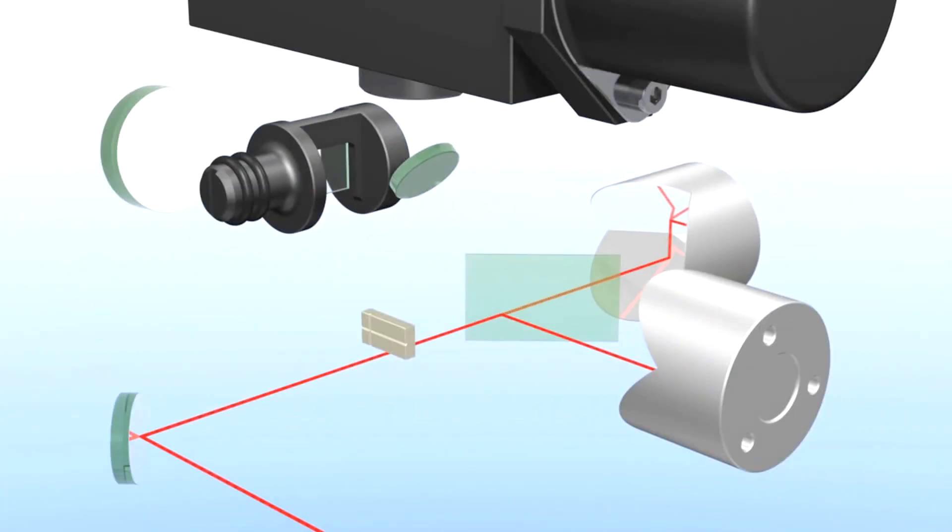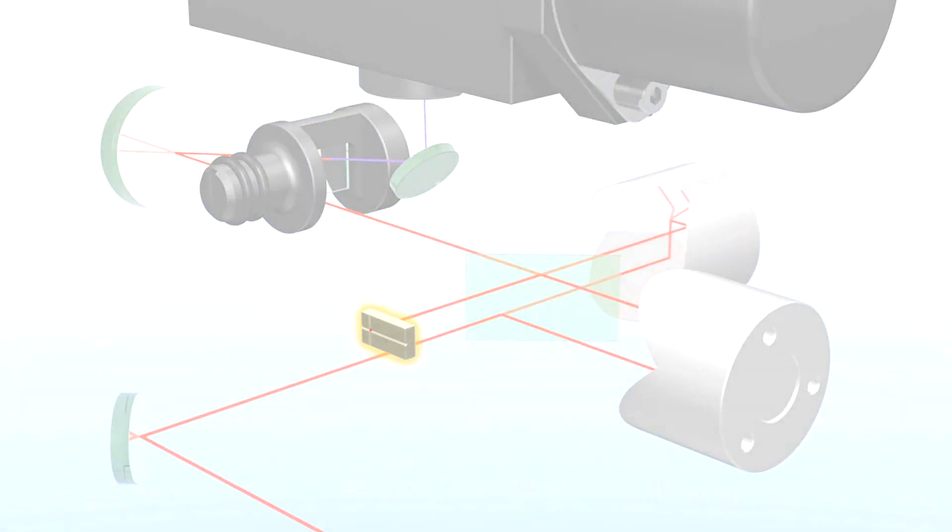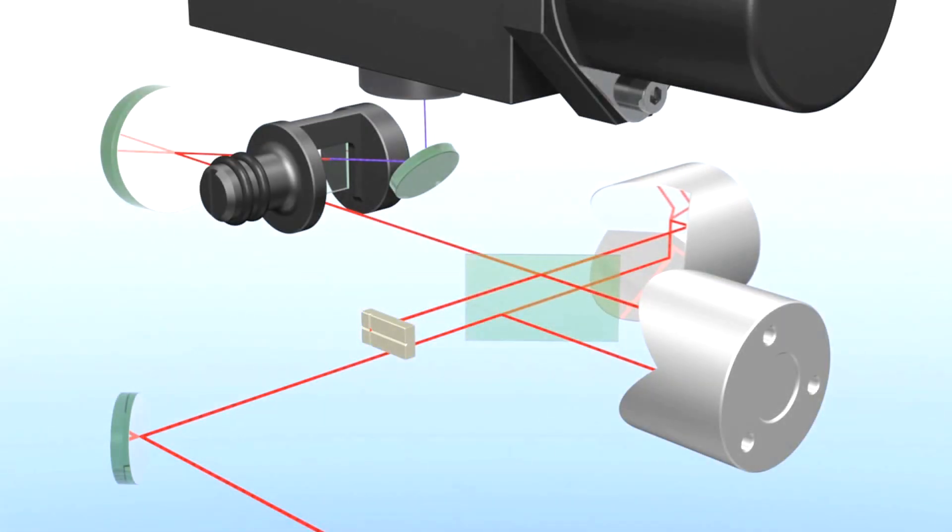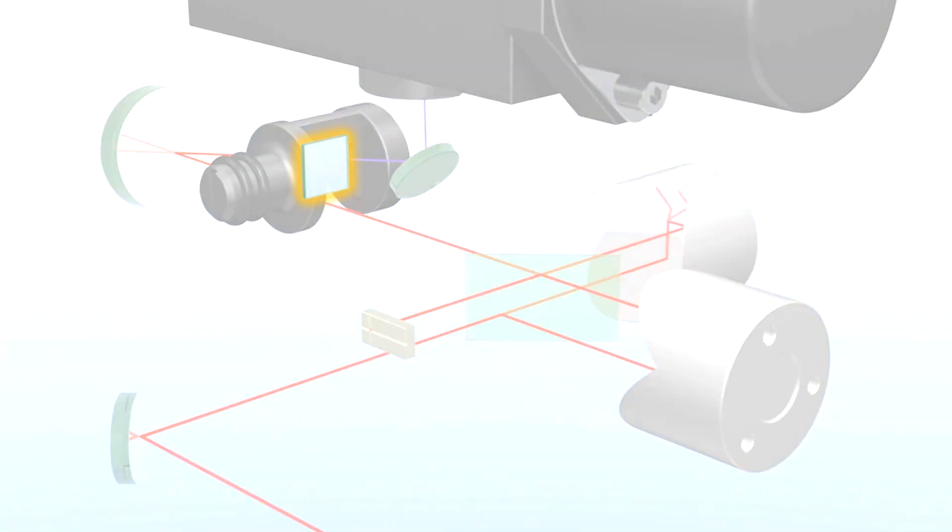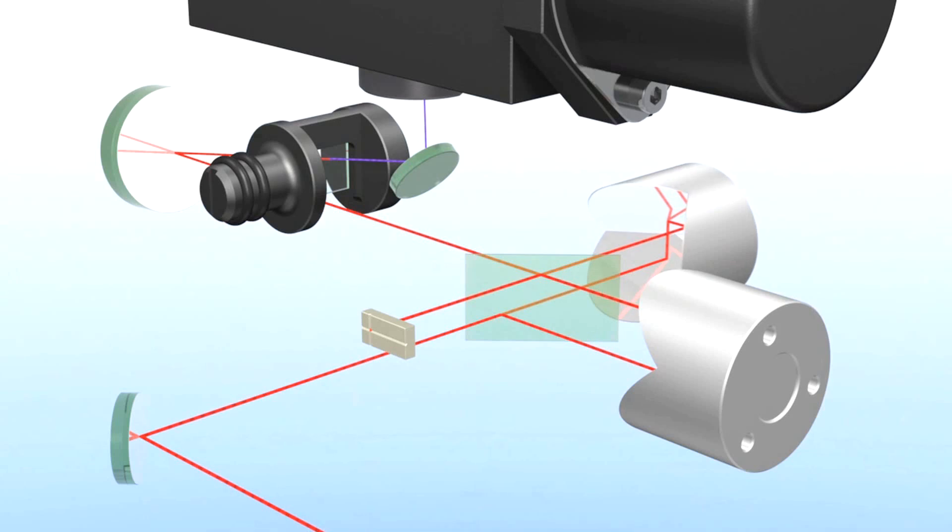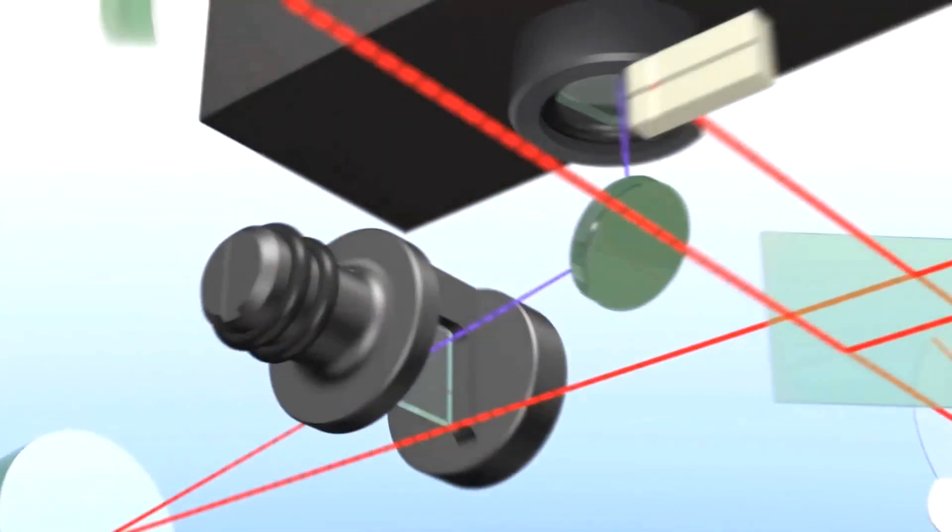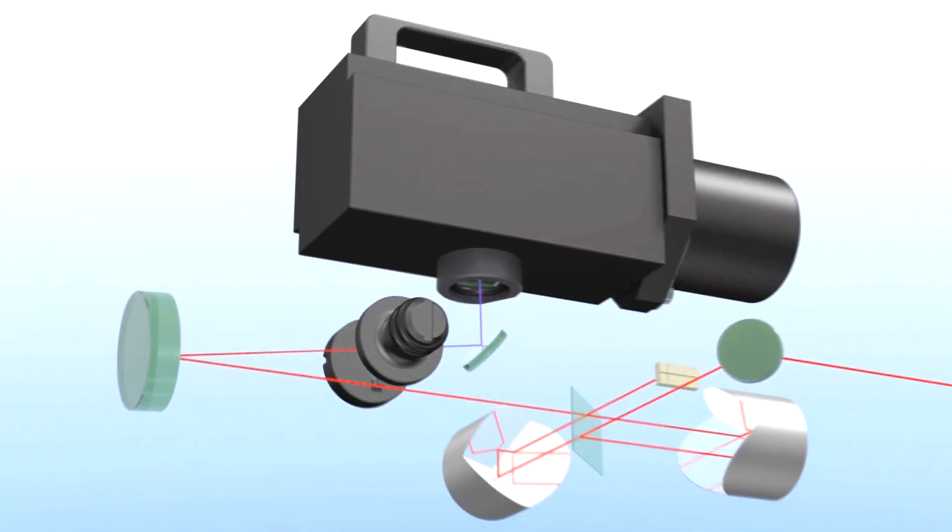These two beams then return to the splitter. From one incoming beam, we now have four. Two are sent to the crosshair and two are reflected to the nonlinear crystal. Depending on the overlap of the two interacting pulses, a new color, such as blue, is generated.